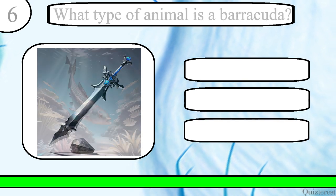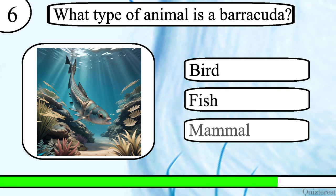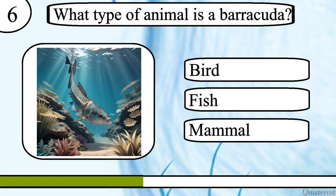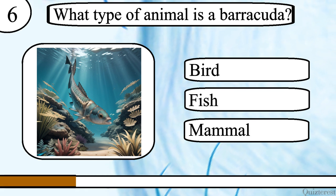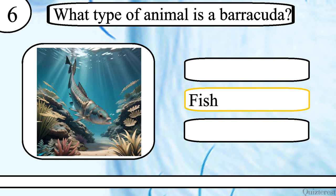Question 6. What type of animal is a barracuda? Bird, fish or mammal? The correct answer is fish.